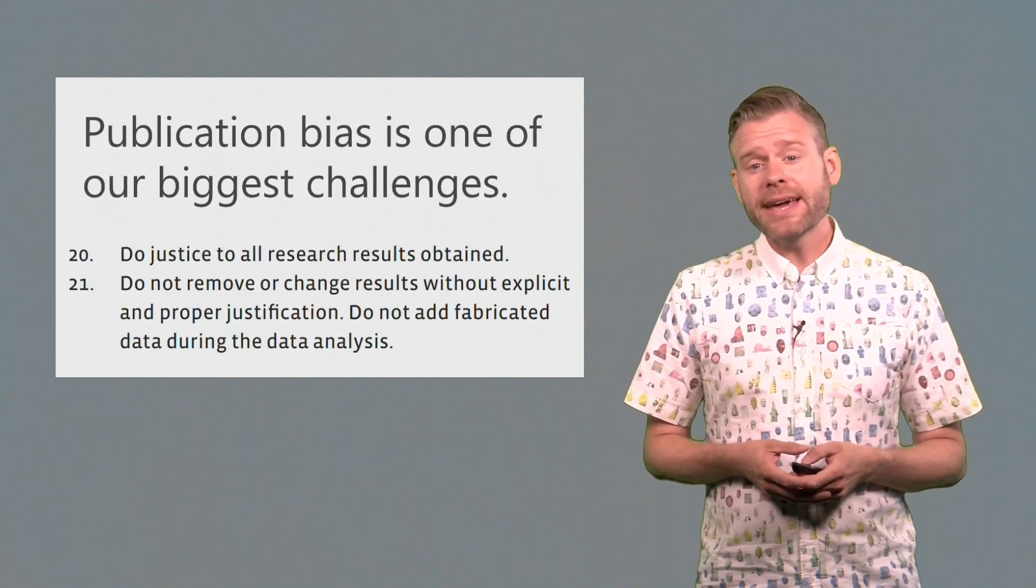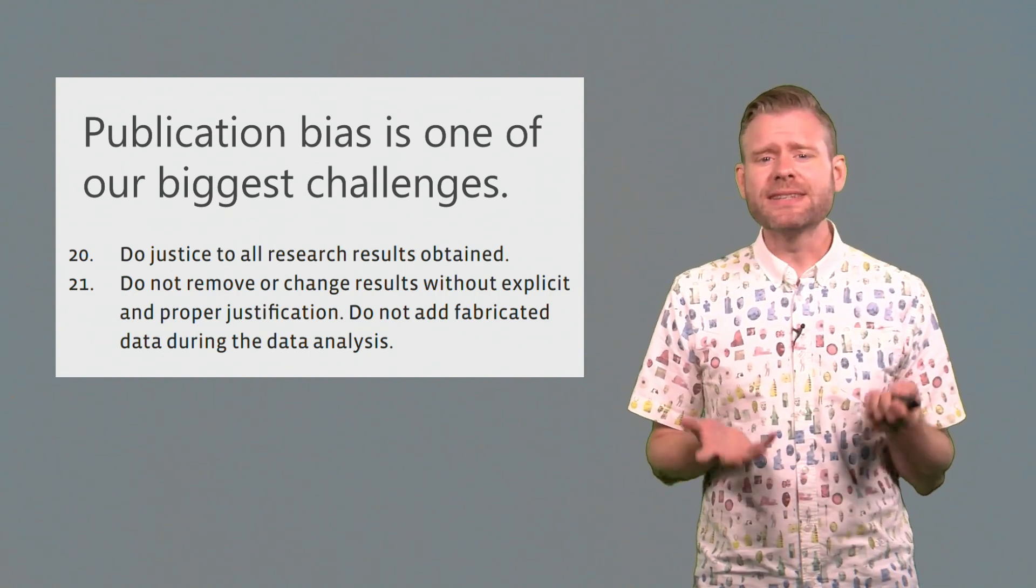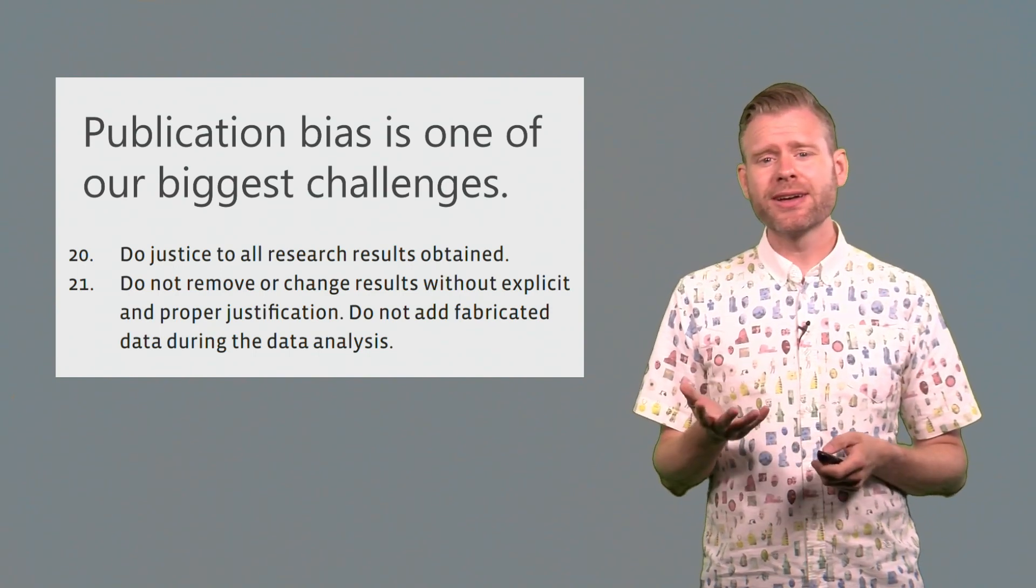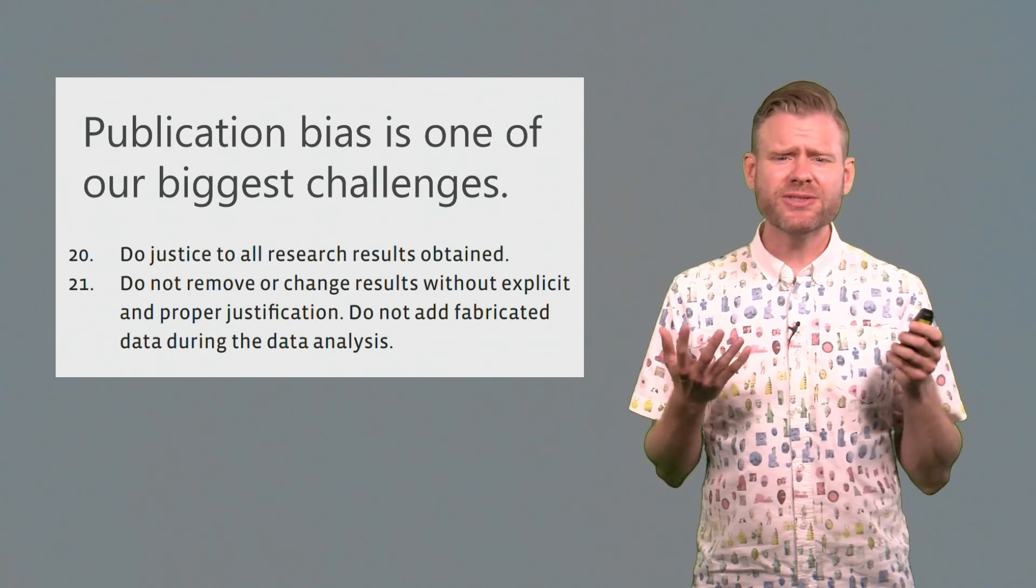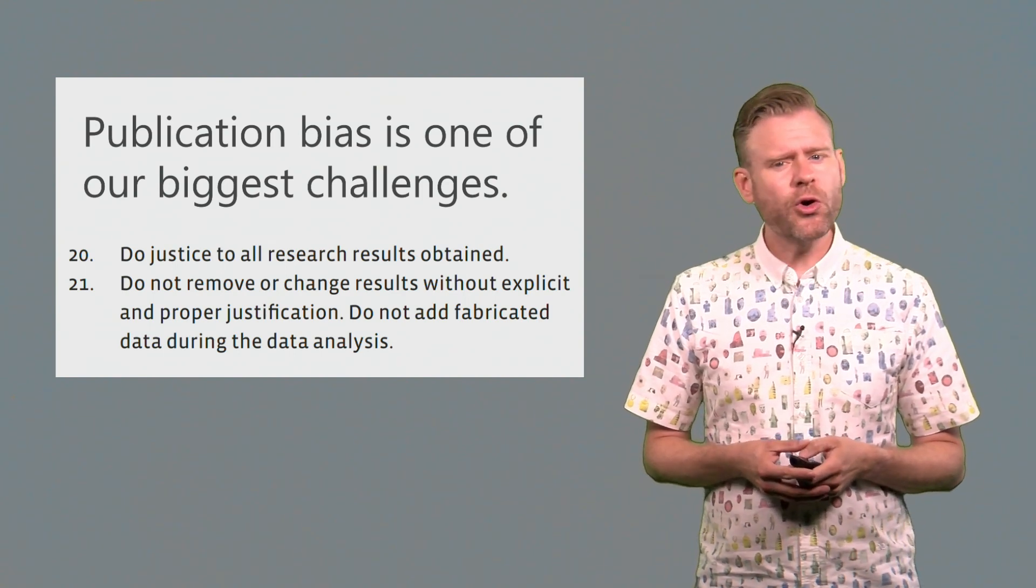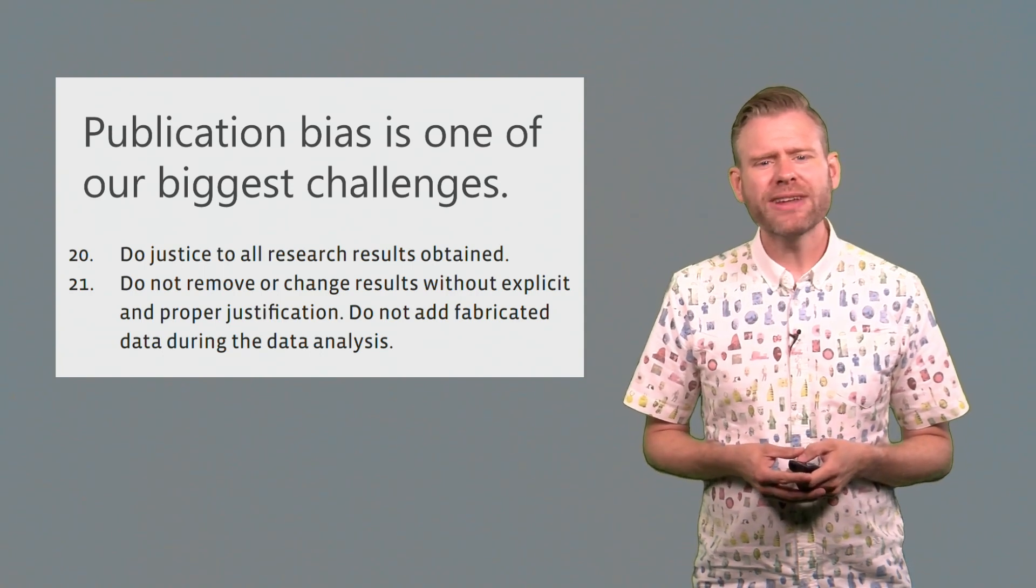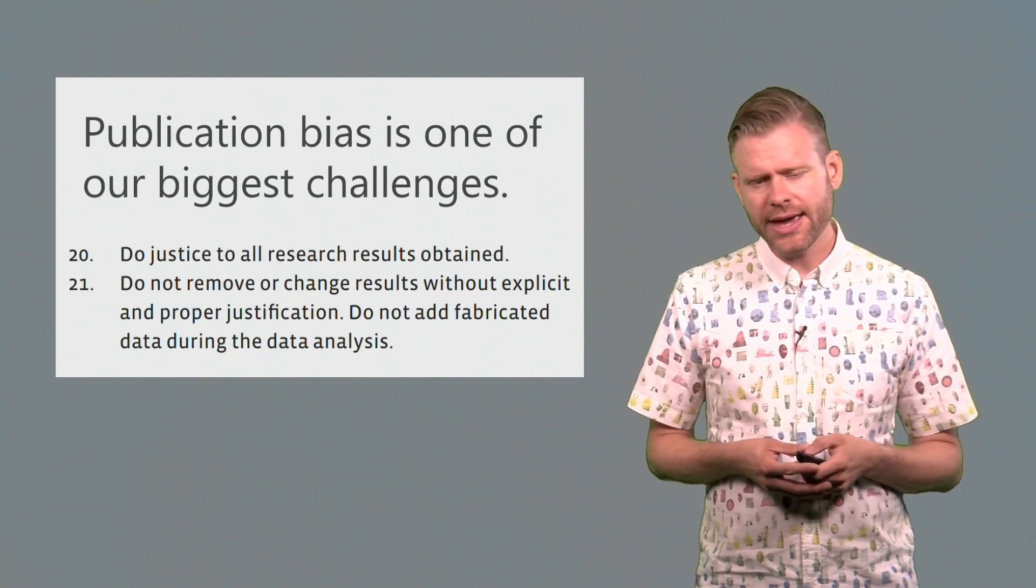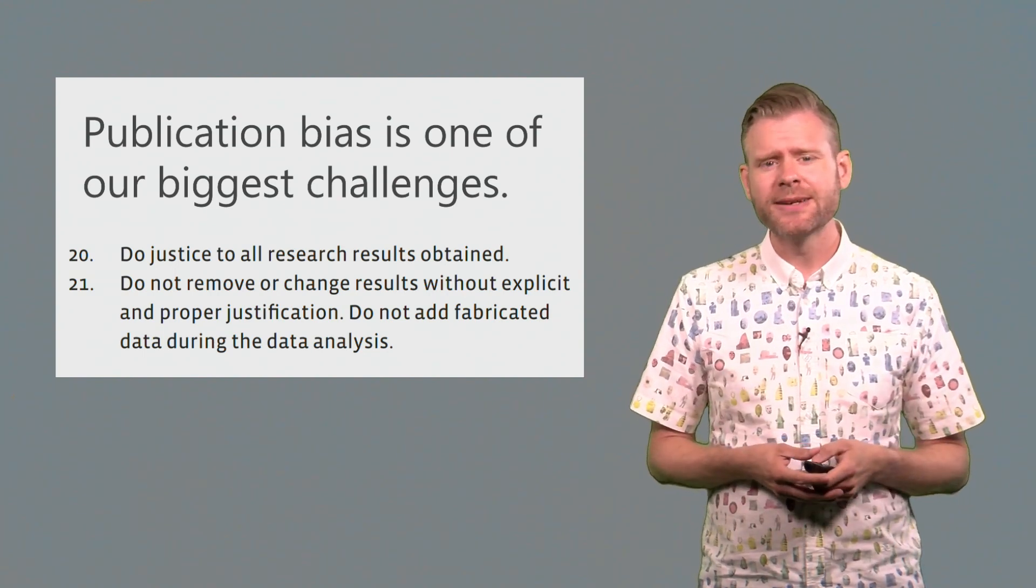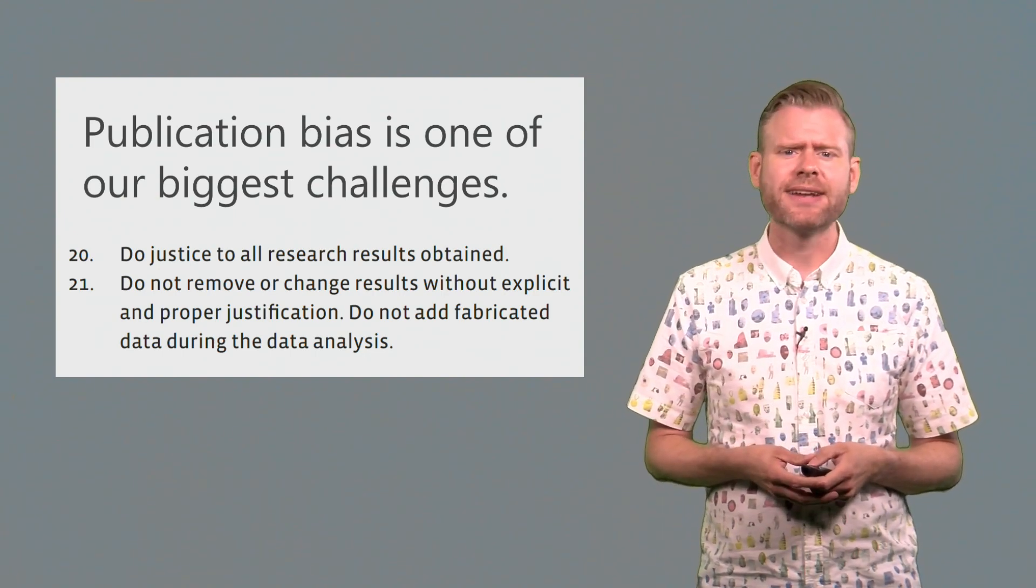So I would say that publication bias is one of the biggest challenges that we're facing. We should be able to publish these lines of mixed results if we do research. And actually, if we look at the scientific code of conduct, it also tells us that we should be doing this. It says that we need to do justice to all research results obtained. We should not remove or change results without explicit and proper justification. So publishing selectively only the results that work is problematic. This is a topic we'll return to in the next module when we talk about scientific integrity.